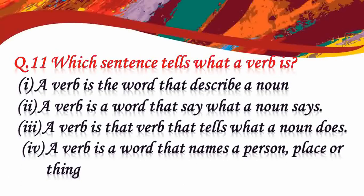Question number 11: which sentence tells what a verb is? Option 1: a verb is a word that describes a noun. Option 2: a verb is a word that says what a noun says. Option 3: a verb is a word that tells what a noun does. Option 4: a verb is a word that names a person, place, or thing. Verbs are action words in a sentence that describe what the subject is doing. So the answer is option 3.